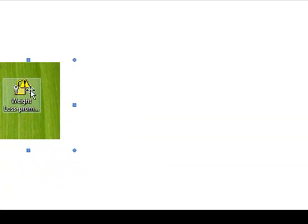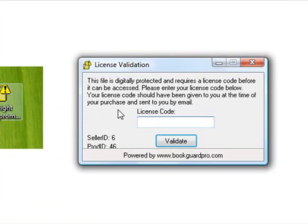Now, here's what the icon looks like once the person has downloaded your file that they've purchased from you. They have a little icon here with a padlock and a key, and they will double-click on that icon, and here's what will come up.